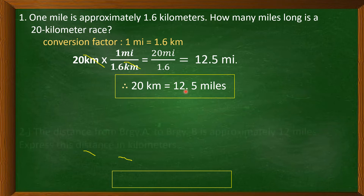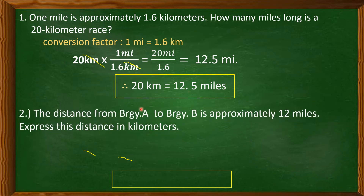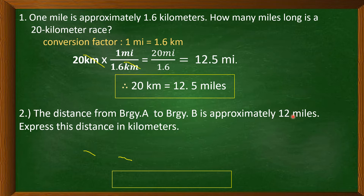Next: the distance from Barangay A to Barangay B is approximately 12 miles. Express this distance in kilometers. This problem is almost similar to Problem 1. The only difference is that in Problem 2, we are asked to convert 12 miles to kilometers. We use the same conversion factor: 1 mile is equal to 1.6 kilometers.